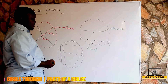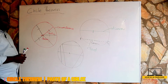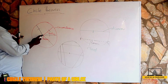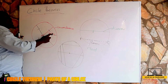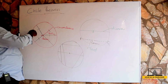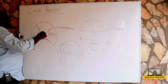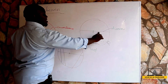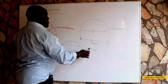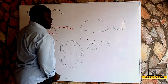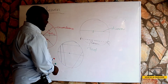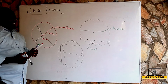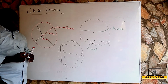So any straight line that moves from one point of the circle to another point is what we call a chord. For any circle, we have the center of the circle, the circumference, the radius, the diameter, and a chord.